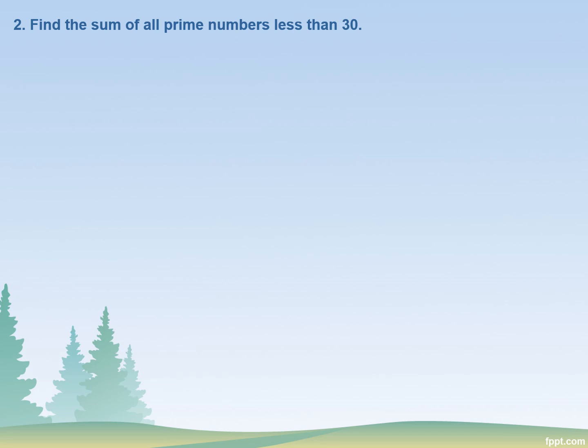The question says find the sum of all prime numbers less than 30. As we learned in our previous video, the prime numbers are those numbers that are only divisible by themselves and 1.